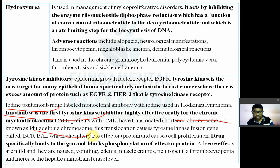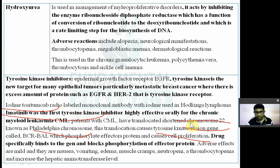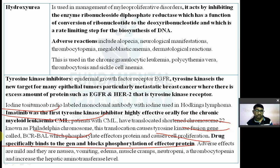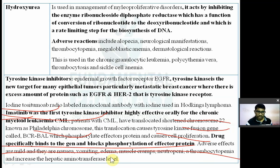The Philadelphia chromosome translocation causes a tyrosine kinase fusion gene called BCR-ABL, which phosphorylates effector cell proteins and causes cell proliferation. Imatinib binds specifically to the gene and blocks phosphorylation of the BCR-ABL tyrosine kinase. Adverse effects include nausea, vomiting, muscle cramps, neutropenia, thrombocytopenia, and increased liver aminotransferase levels.